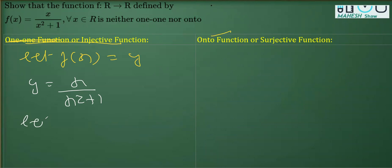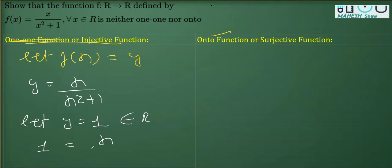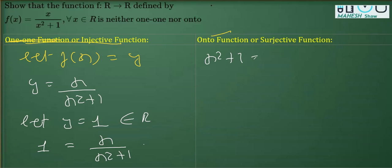For that, we take some value of y. Let's say y = 1, which belongs to the real numbers. Replacing y with 1: 1 = x/(x²+1). Cross multiplying gives x²+1 = x, so x² - x + 1 = 0.